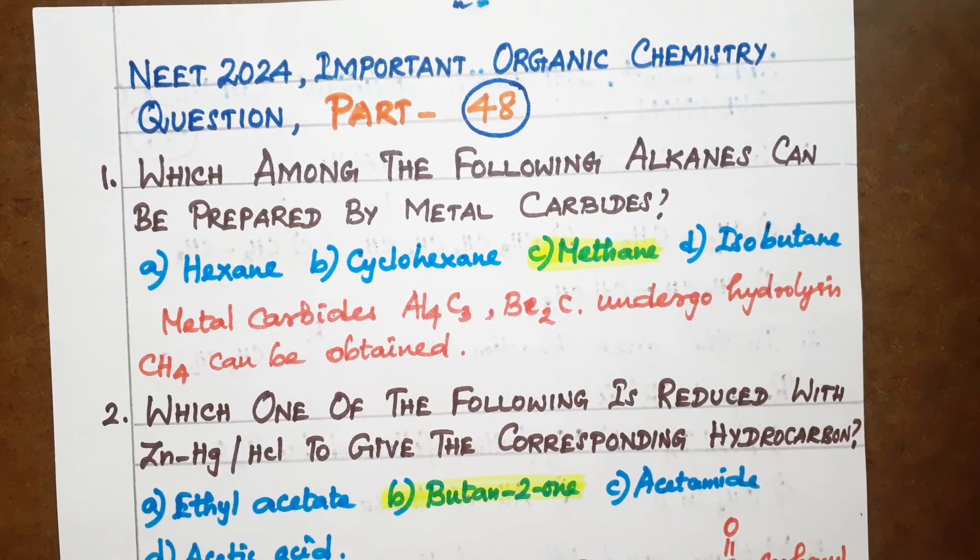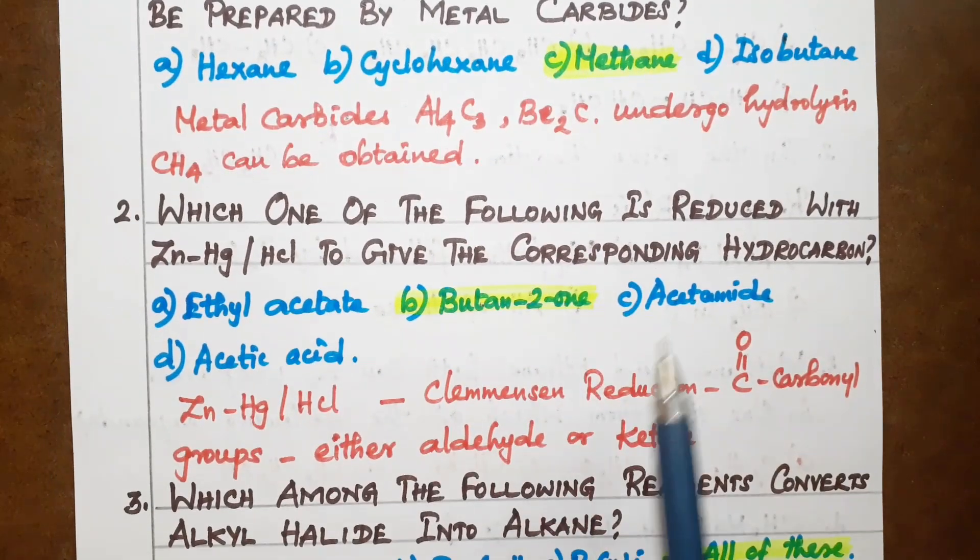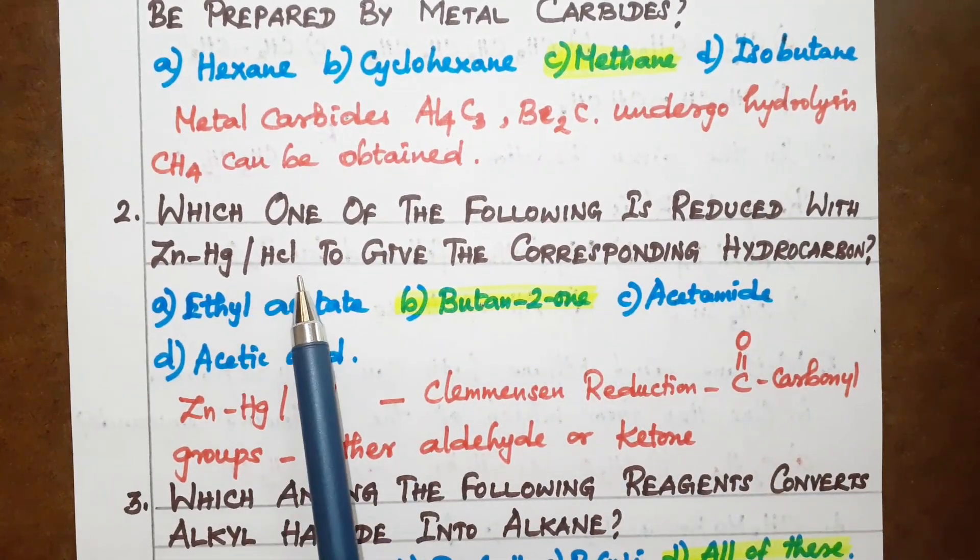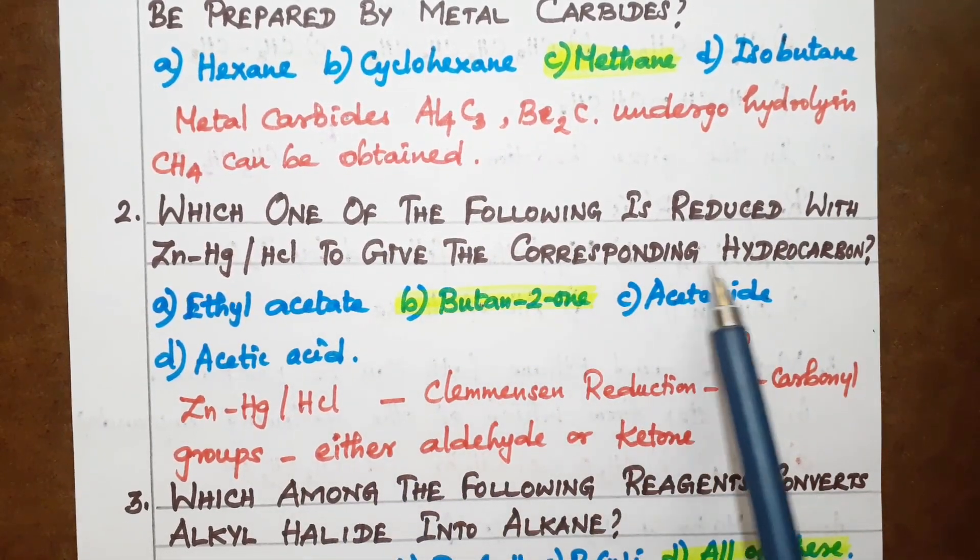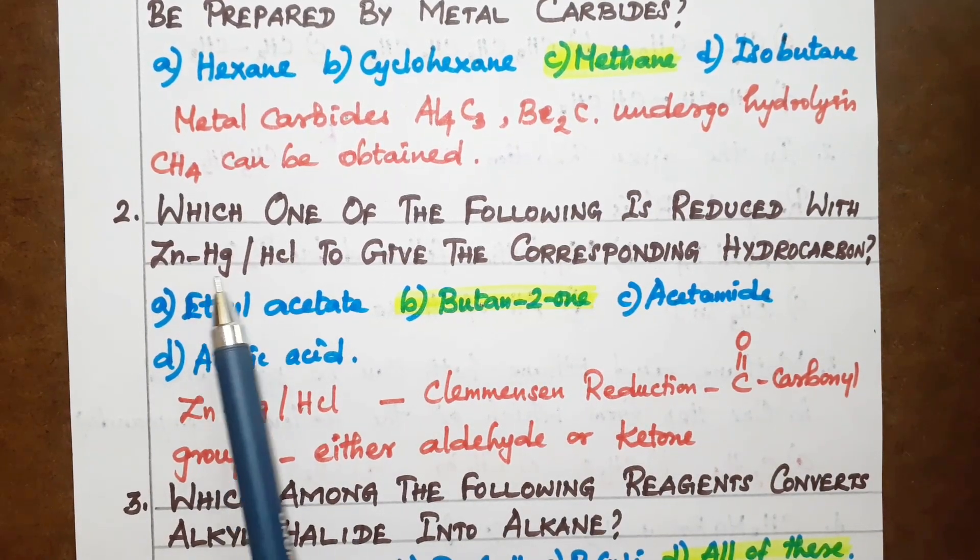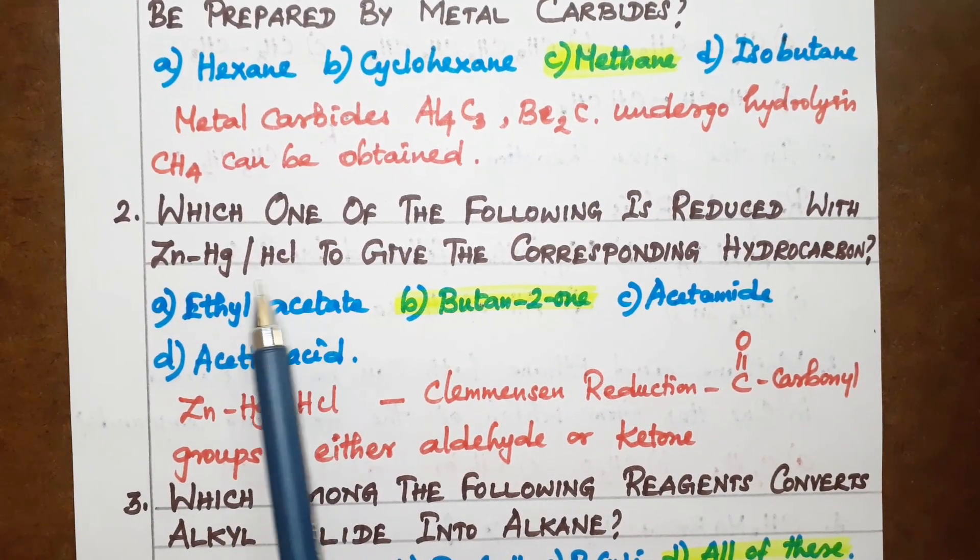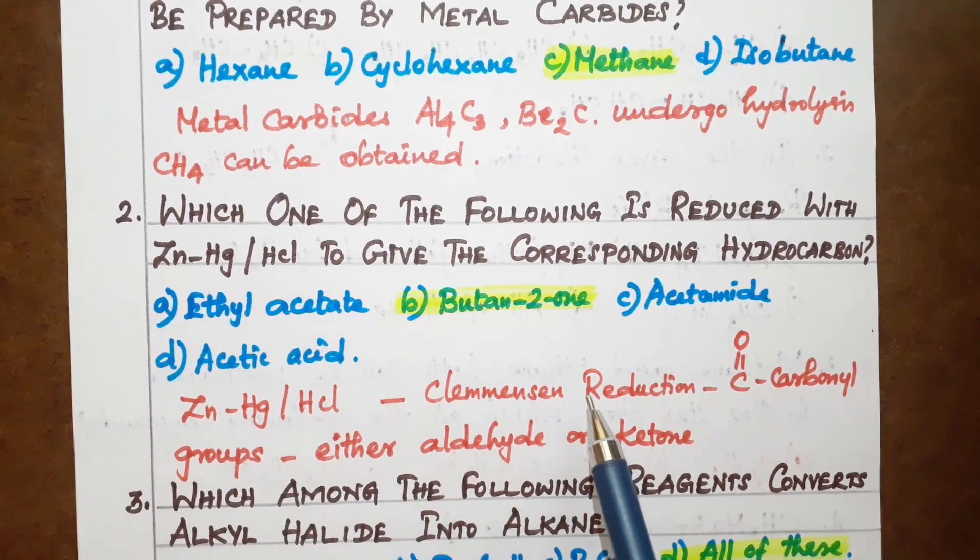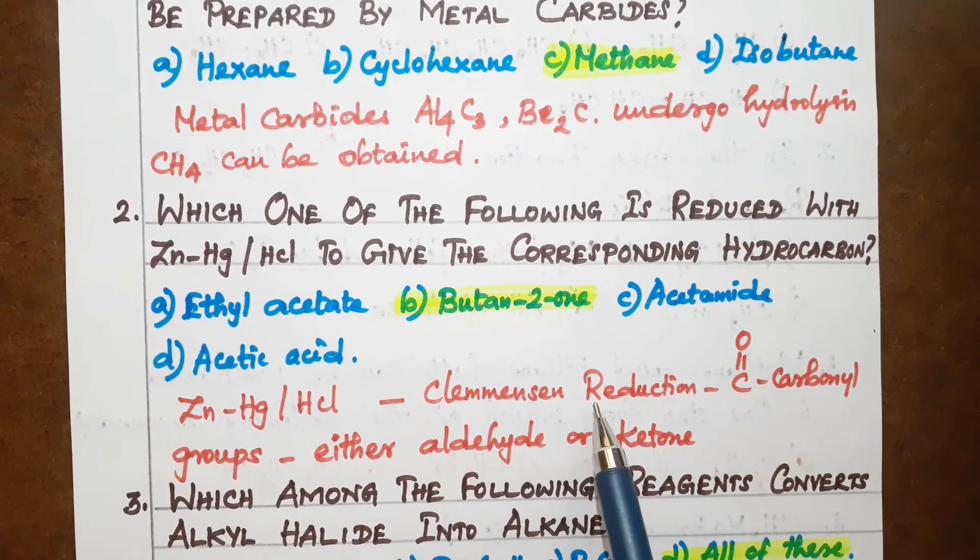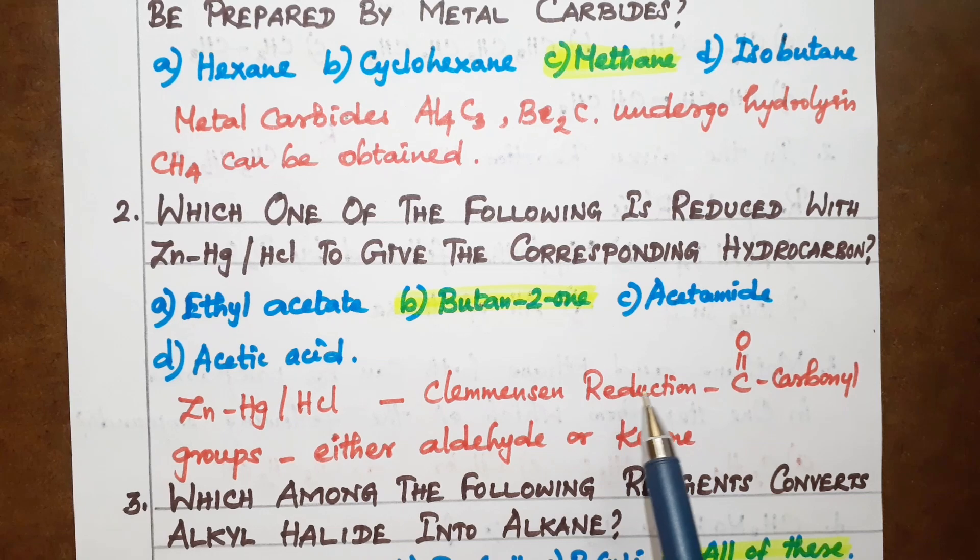The second question: which one of the following is reduced with zinc amalgam and HCl to give the corresponding hydrocarbon? Zinc amalgam with HCl is the Clemmensen reduction. That is, carbonyl compounds—aldehydes or ketones.